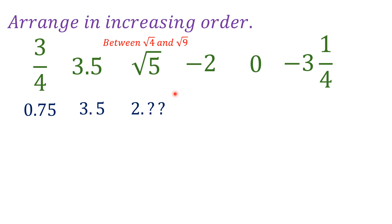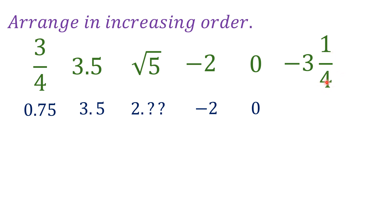For negative 2, it's simply negative 2. Then we have 0. For the rational number negative 3 and one-fourth, it's a whole number negative 3. Convert one-fourth to decimal by dividing 1 by 4, or multiply by 25 to make the denominator 100, giving you 25 on top. So 1 divided by 4 is 0.25, making the full value negative 3.25 in decimal.